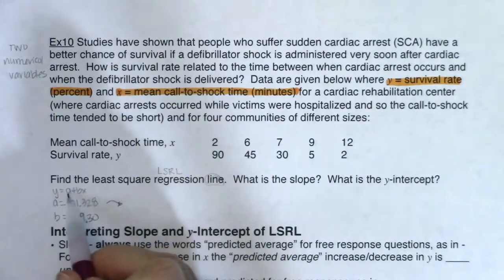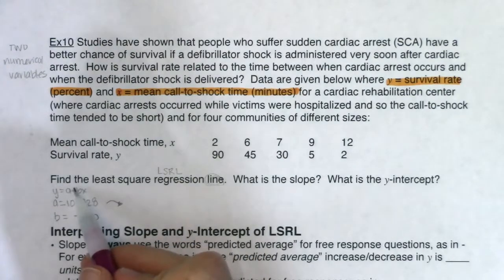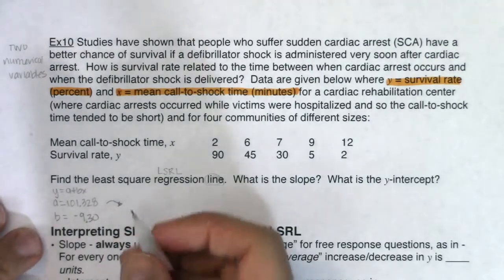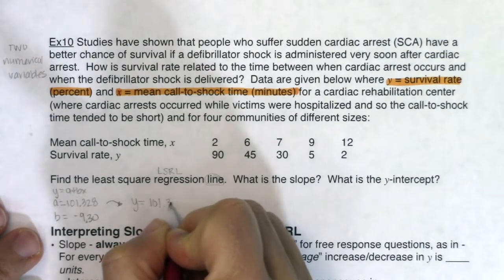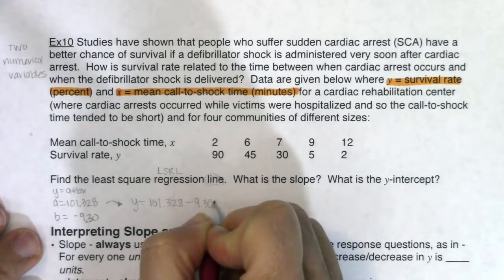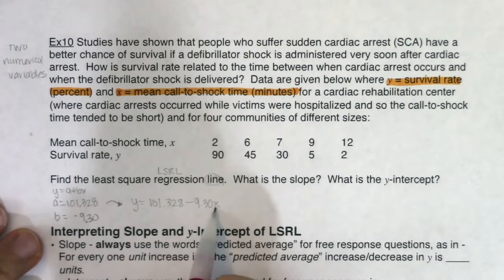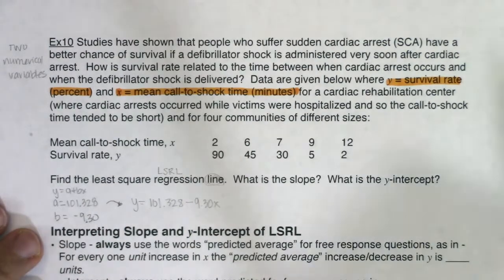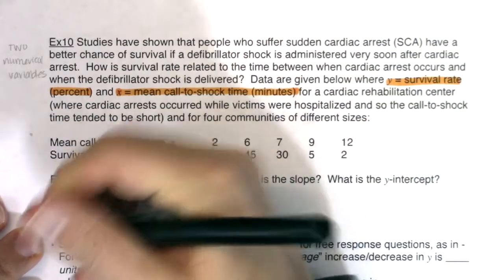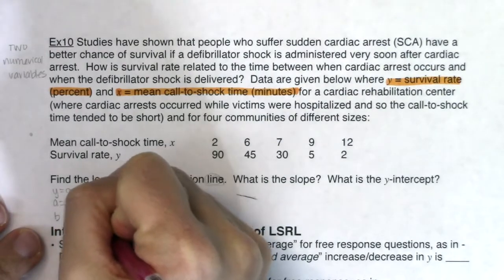For a midterm-level answer, instead of writing the generic a + bx, plug in your numbers. Also, don't write 'plus negative' — just use a subtraction sign. So we write: ŷ = 101.328 − 9.296x. Make sure the x is included — students sometimes forget it. I'll be consistent and use three decimal places throughout, so the slope is −9.296.